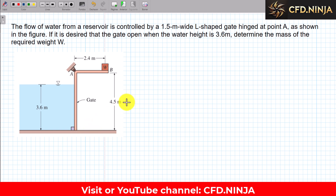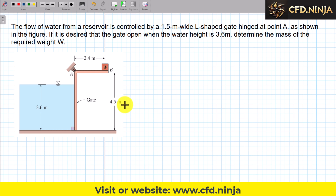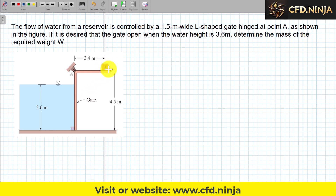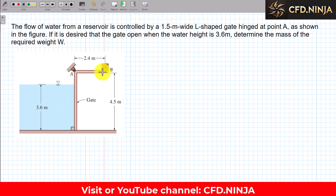Today we are going to develop a hydrostatics problem related to gates. The problem says the flow of water in a reservoir is controlled by an L-shaped gate with a width of 1.5 meters, articulated at point A. If it is desired that the gate opens when the water has a height of 3.6 meters, determine the mass of the required weight W that keeps it in balance so that at this height the gate is about to open.